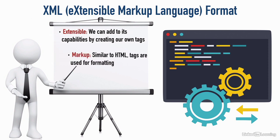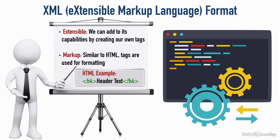Extensible means that we can extend its abilities by adding our own tags. When we think of a markup language, we might think of HTML used for web development, where we can add tags to italicize or bold text. Oftentimes when I'm writing a blog post, I'll use HTML to set the type of header I want for a piece of text.